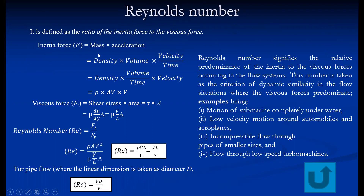Inertia force is mass into acceleration — by rearranging the terms we get the expression of inertia force. Viscous force is shear stress into area, that is shear area; after rearranging we get that expression. By taking the ratio, we will get the expression of Reynolds number, that is V·L / ν.